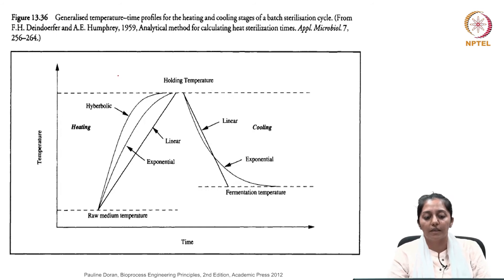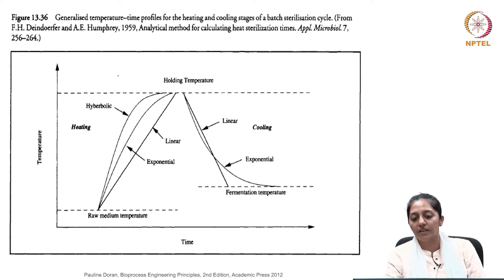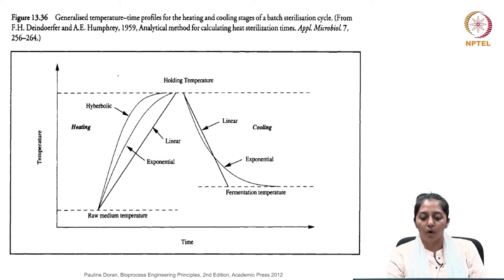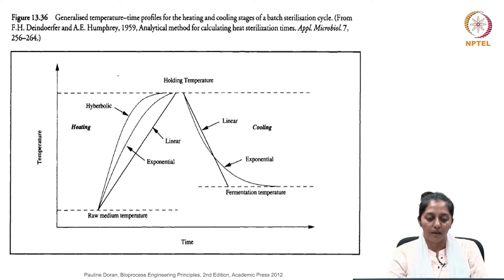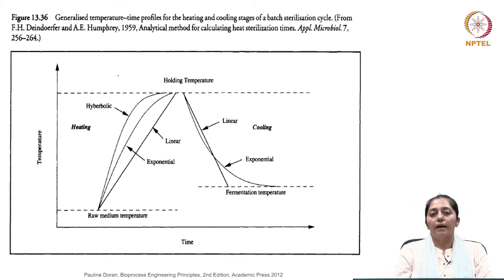Here you can see the different temperature-time profiles for various heating and cooling stages in batch sterilization cycles. Depending on the heat source, it can follow different profiles — it can be a hyperbolic function, an exponential function, or a linear function with respect to time.